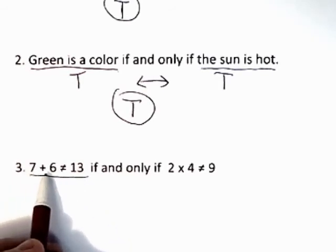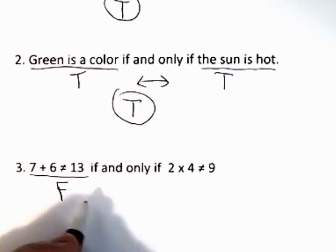If you look at this statement, 7 plus 6 is 13. 13 is equal to 13, so saying 13 is not equal to 13 is false.